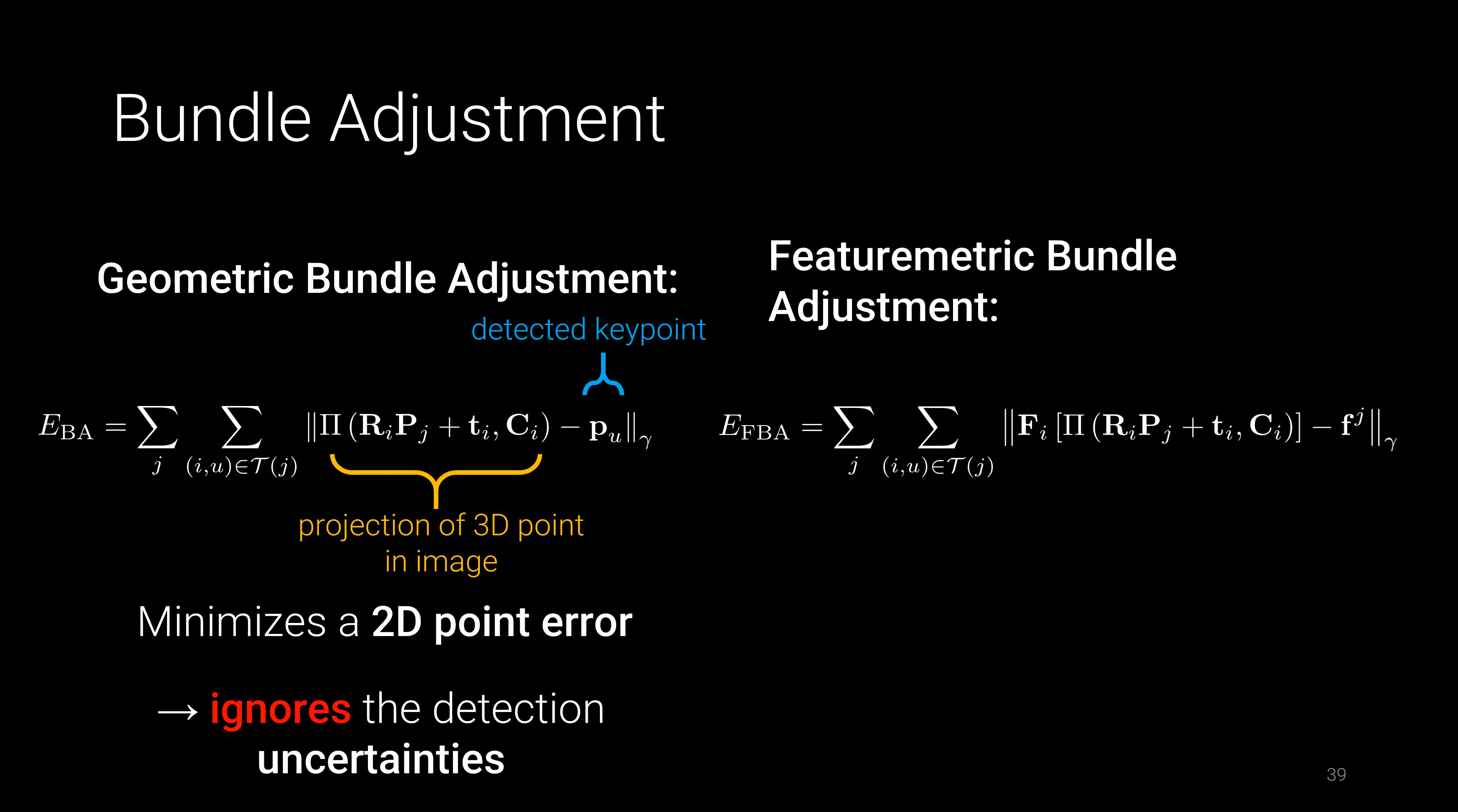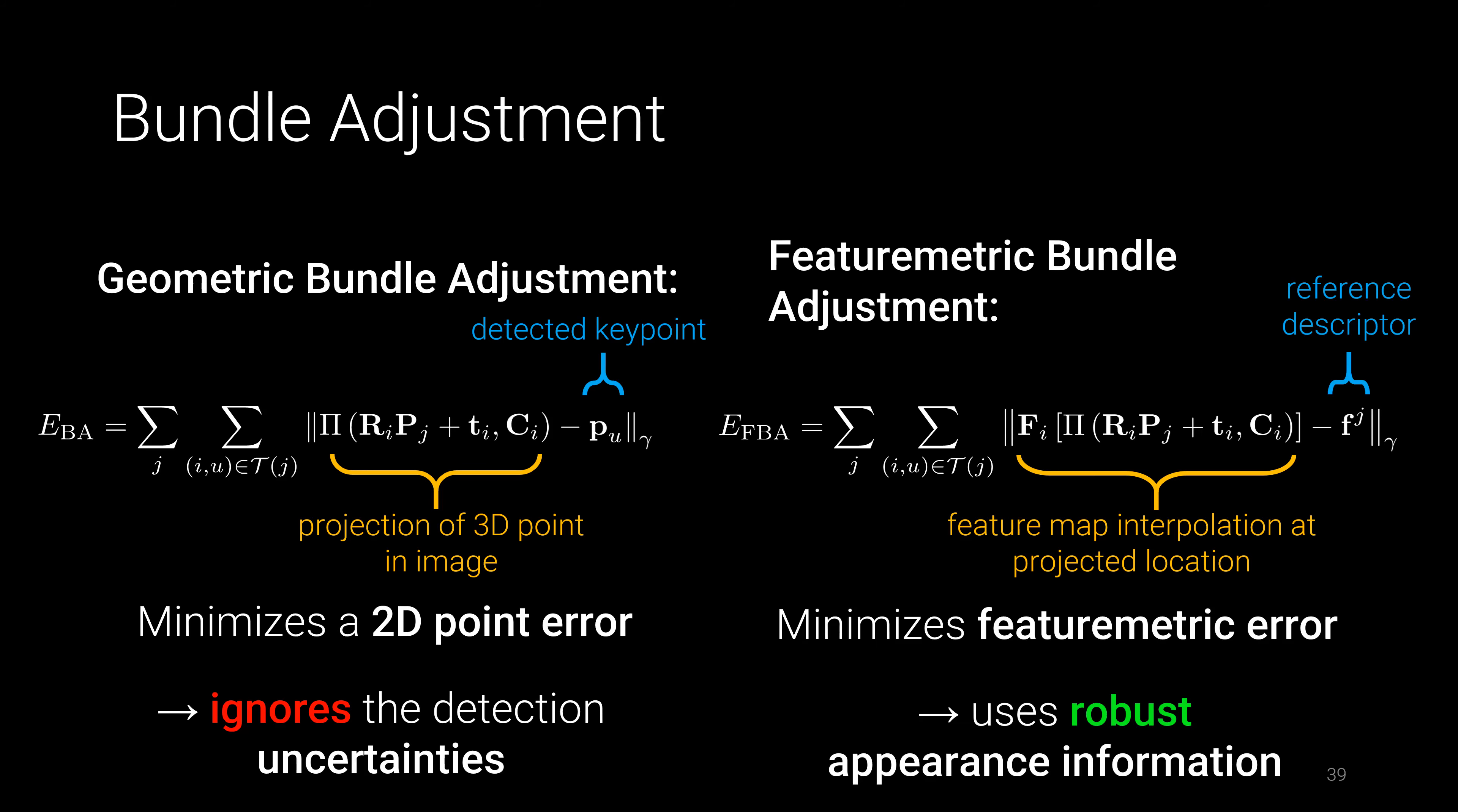In contrast, featuremetric bundle adjustment interpolates deep feature maps at a 3D point projection and compares it to a fixed reference. Both poses and 3D points are globally adjusted to minimize the featuremetric error. This direct optimization uses robust appearance information contained in the deep features.